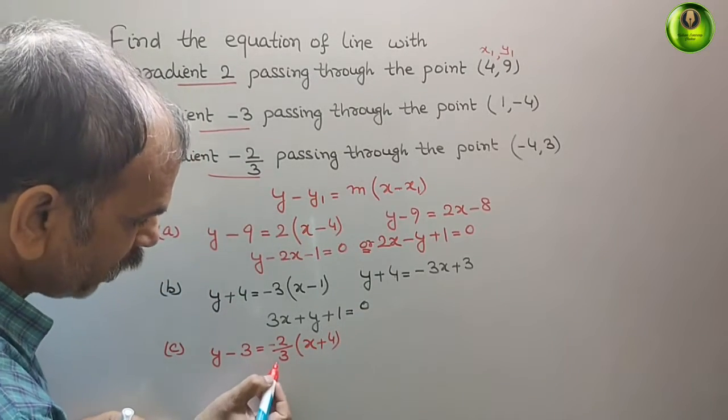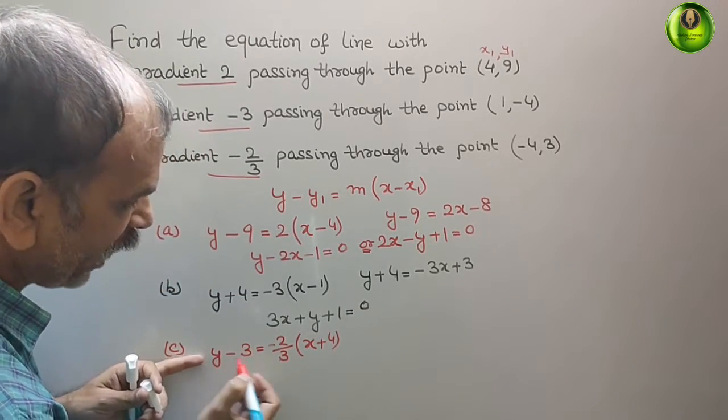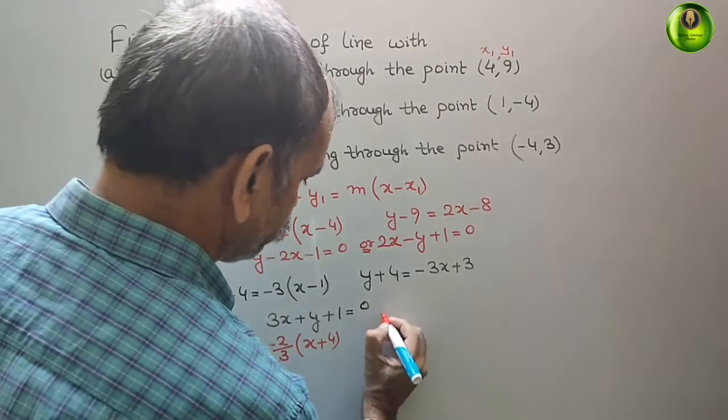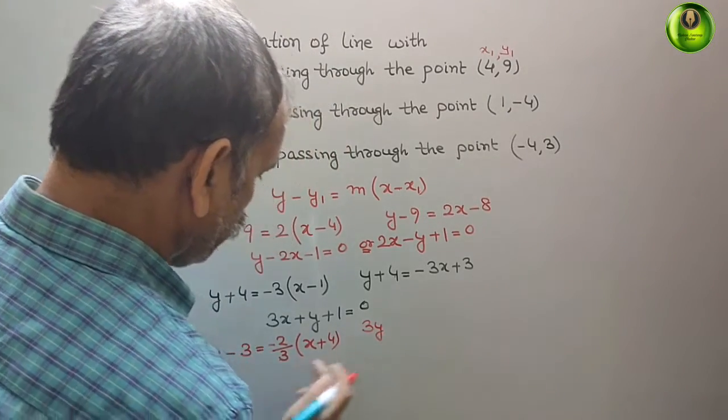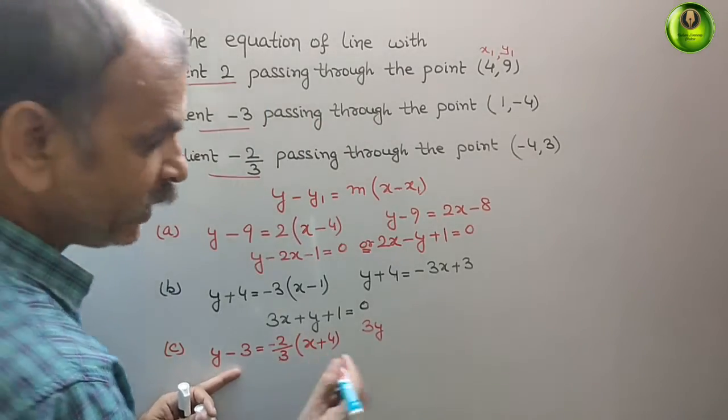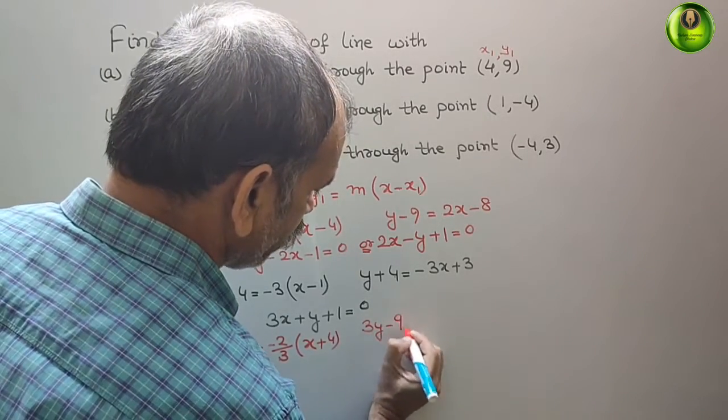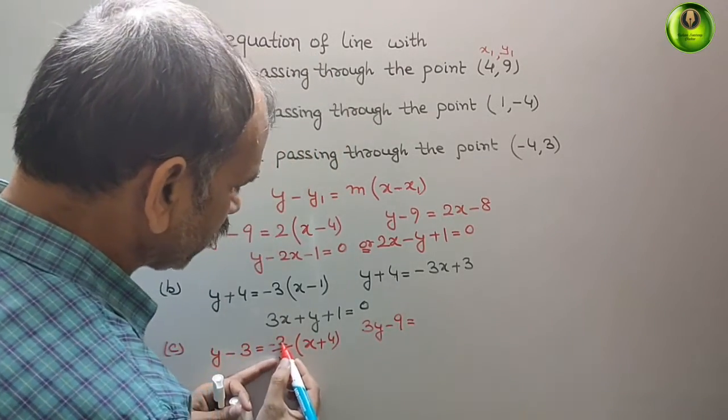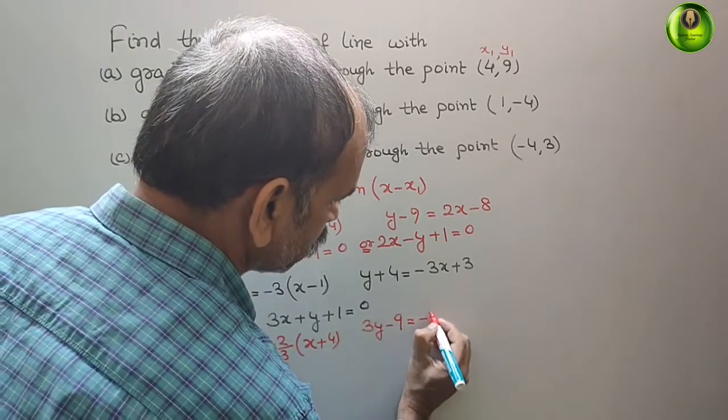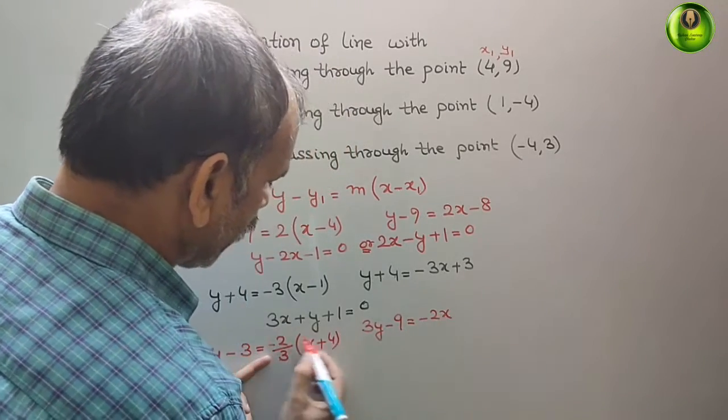Now, cross multiply this. 3 into y is 3y. 3 into minus 3 is minus 9. That is equal to minus 2x and minus 8.